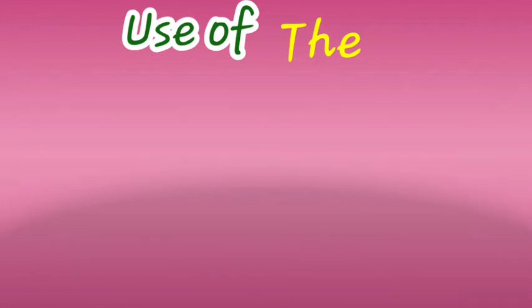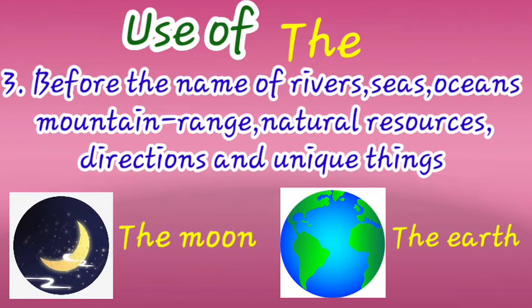The third use of 'the' is before the names of rivers, seas, oceans, mountain ranges, natural resources, directions, and unique things. For example: 'the moon' — the moon is unique, there is no other like it; 'the Earth' — there is only one Earth. These are unique things, so we use 'the' before them. Similarly, before the names of rivers and other natural features, we also use 'the.'